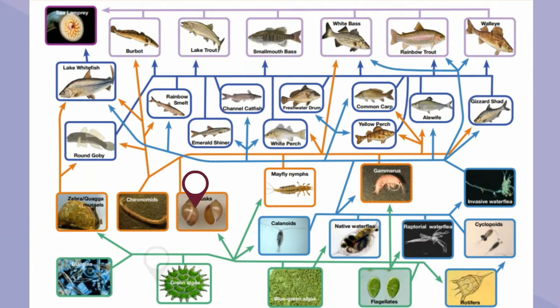So when the mollusk eats algae, you lose 90% of the energy. Then when the perch eats the mollusk, only 10% of this energy is passed on. And finally when the bass eats the perch, only 10% of the energy is passed on again.